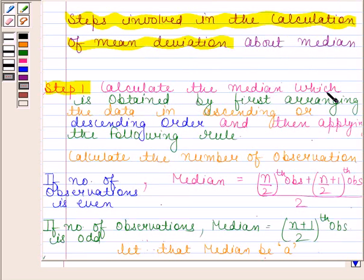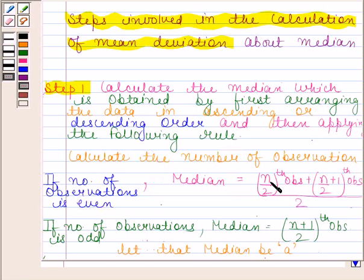In the first step, we have to calculate the median, which is obtained by first arranging the data in ascending or descending order, and then applying the following rule: calculate the number of observations. If the number of observations is even, then median equals the (n/2)th observation plus the (n/2 + 1)th observation, divided by 2. And if the number of observations is odd, then median equals the ((n+1)/2)th observation. Let that median be A.